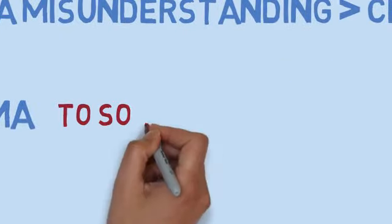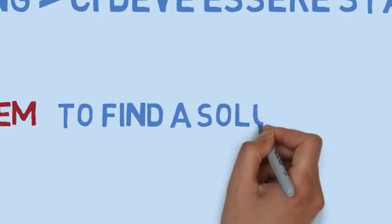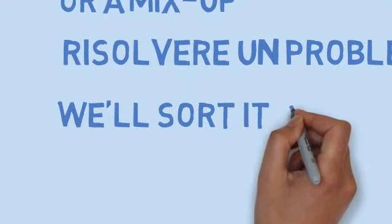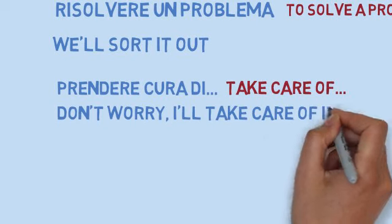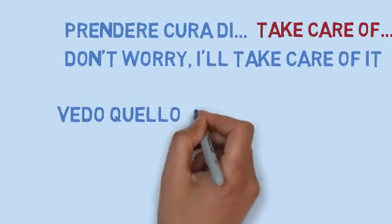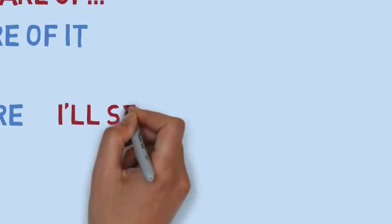What are the verbs for 'risolvere un problema'? To solve a problem, to find a solution. English has many different verbs apart from 'solve' which you need to know because you'll hear them very often. One of them is 'we'll sort it out' — sort something out. Another is 'don't worry, I'll take care of it.' And 'vedo quello che posso fare' — 'I'll see what I can do.' With future 'I'll' because it's a snap decision.